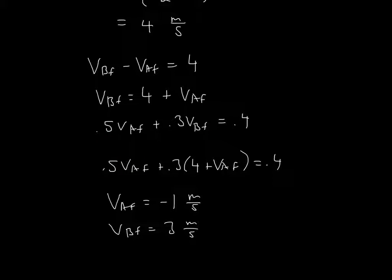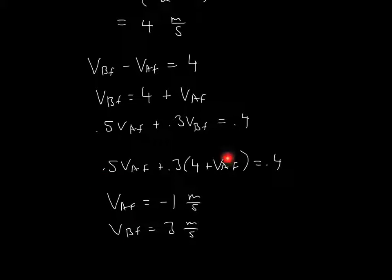Using the final momentum equation, we can plug in for the final velocity of B using the equation 4 plus the final velocity of glider A. Now since we have this equation, it's just algebra — you solve for the final velocity of glider A and you get negative 1 meters per second. Then using that, you can solve for the final velocity of glider B, and you'll get 3 meters per second. I hope that helped, and thanks for watching.